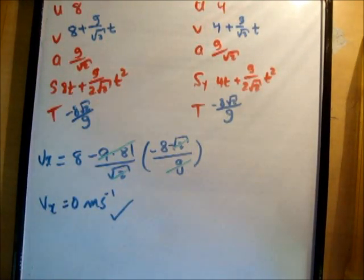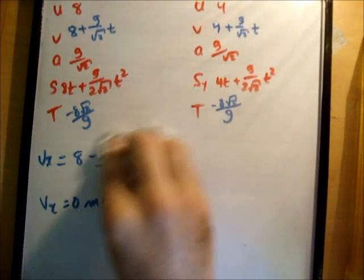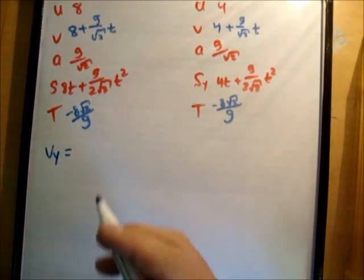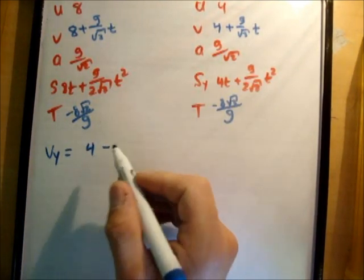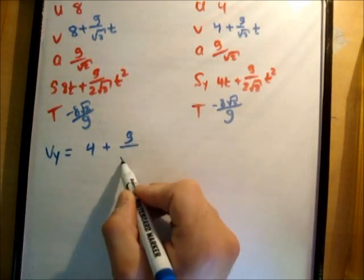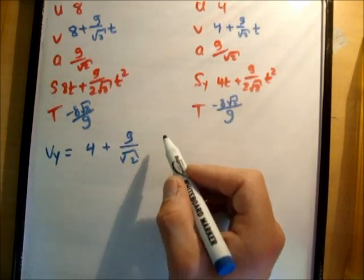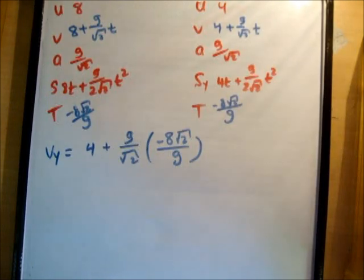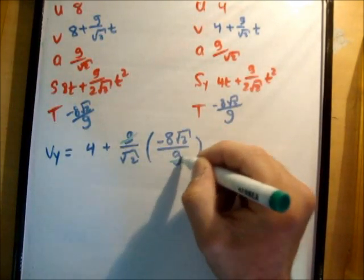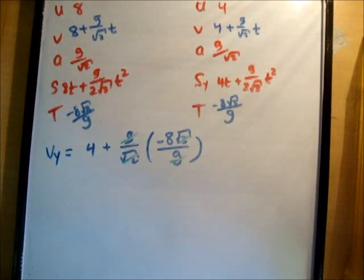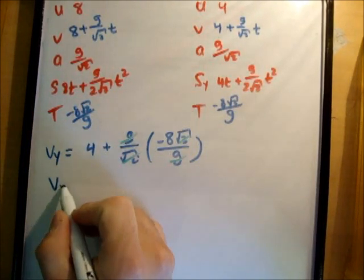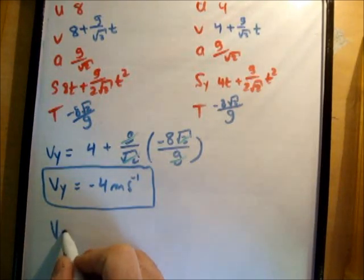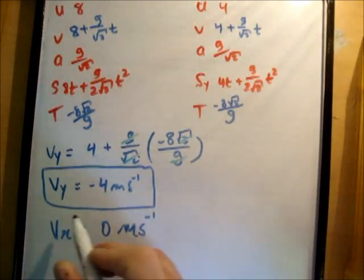So the next thing we need to do is get v sub y. So v sub y is equal to 4 plus g over root 2 times t, which is minus 8 root 2 over g. So we can cancel some pieces here as well. And we get 4 minus 8. So we get v sub y equal to minus 4 meters per second. And we got that v sub x is equal to 0 meters per second.